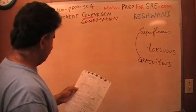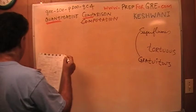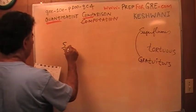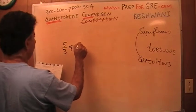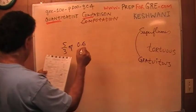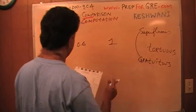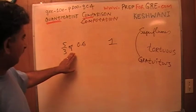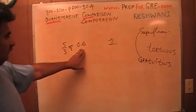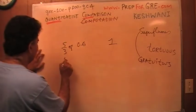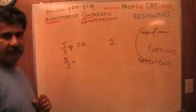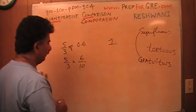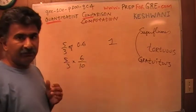Number four. Question number four: five-thirds of 0.6 versus one. 'Times' is the same as 'of,' you understand? So five-thirds of 0.6 is the same as five-thirds times 0.6. Now, 0.6 is six over ten, which of course is the same as three over five.